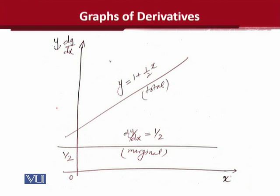There are two lines in it. One of the lines has a positive slope, as you can see, and it is mentioned that it is the actual or total function. The equation of it is 1 plus half of x. So we can expect a positive slope because there is a positive sign before the variable part — there is a positive slope of the actual or total function.